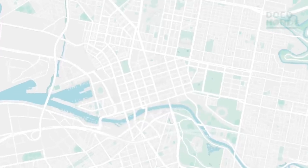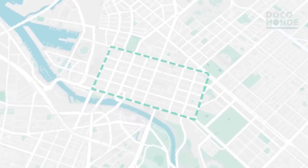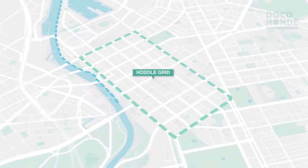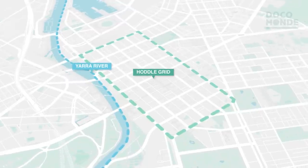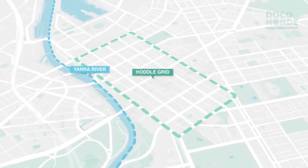Hoddle laid his plan on the original establishment survey prepared by Russell, with a grid to run generally parallel to the river, and its full extent bound by three significant hills in the vicinity.